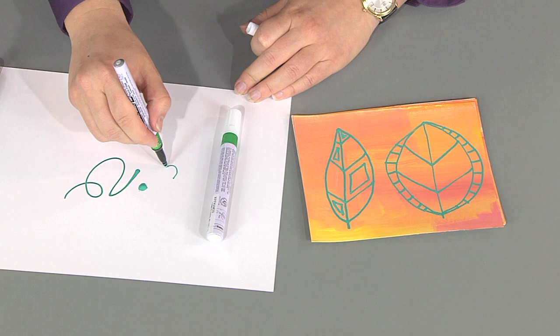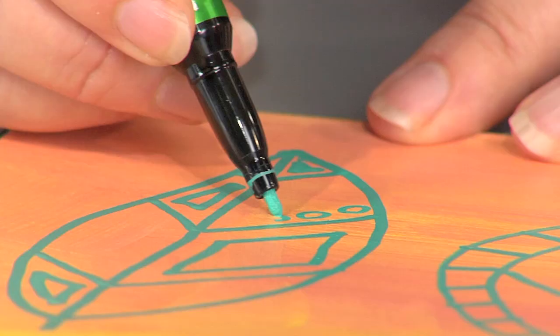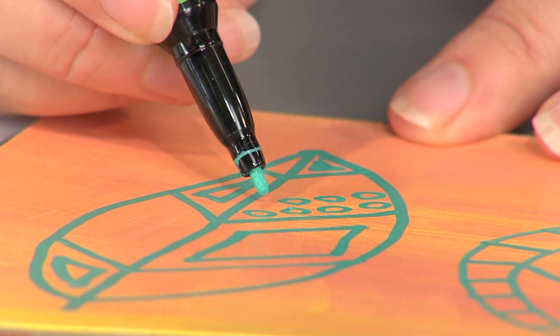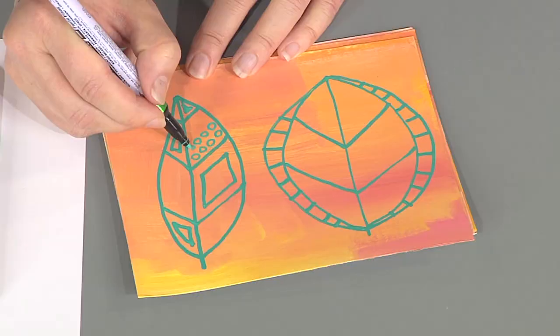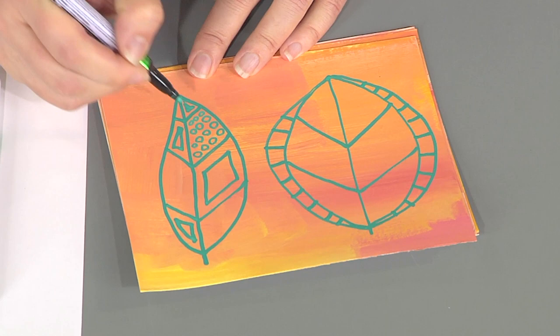You can see that the color coordinates perfectly, so if someone were to look at this, they'd have no idea that I actually used two different markers to make this glorious page. So I would just continue to fill with some circles all the way down.